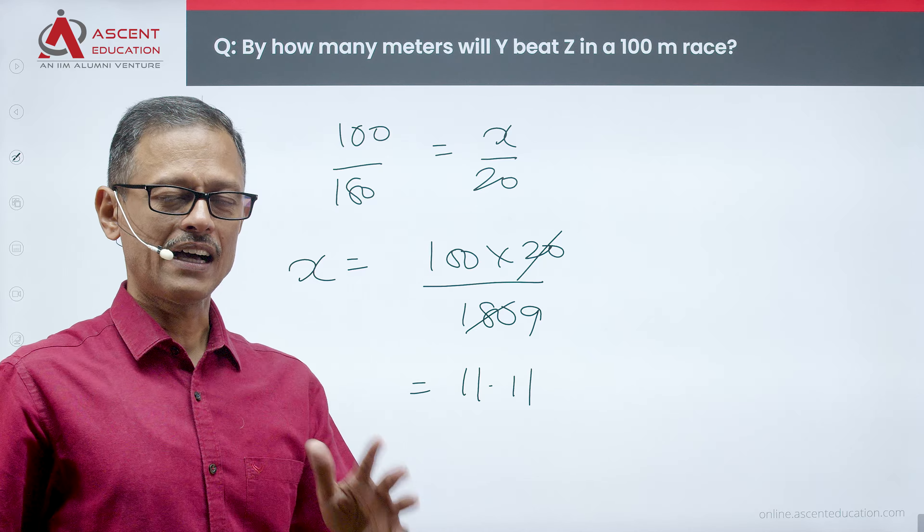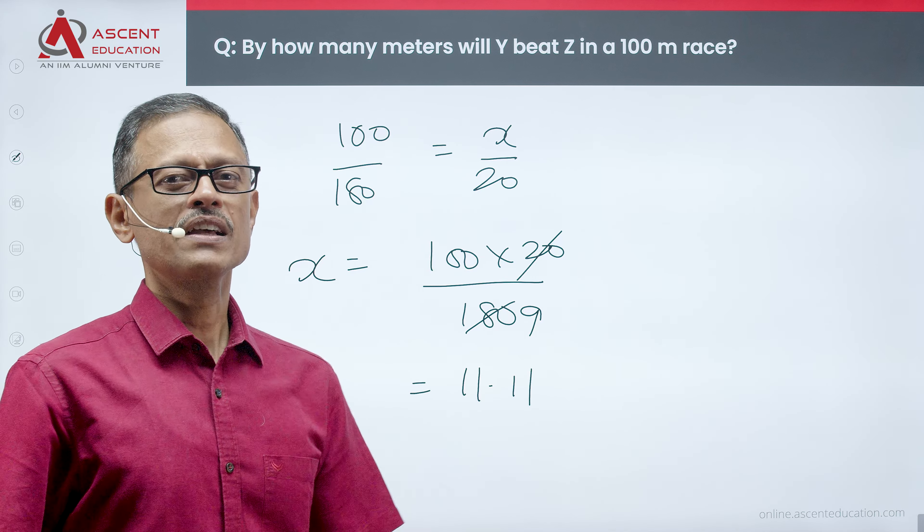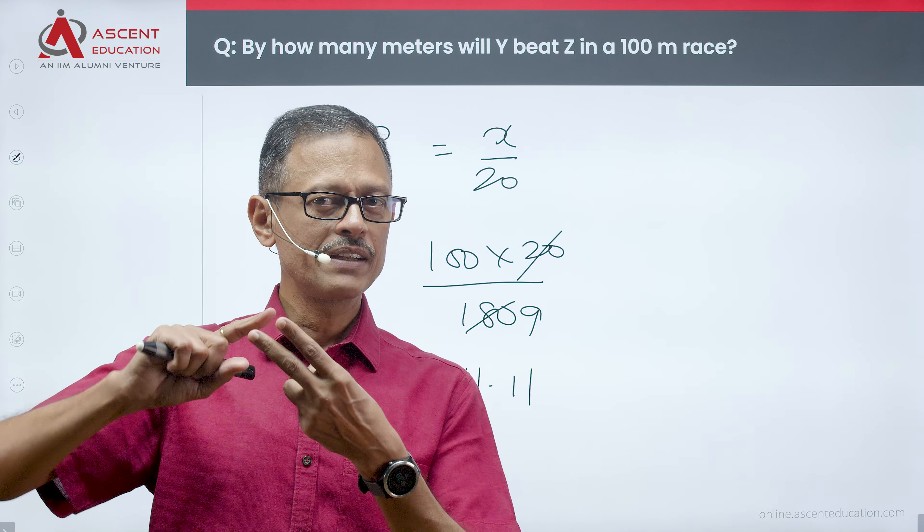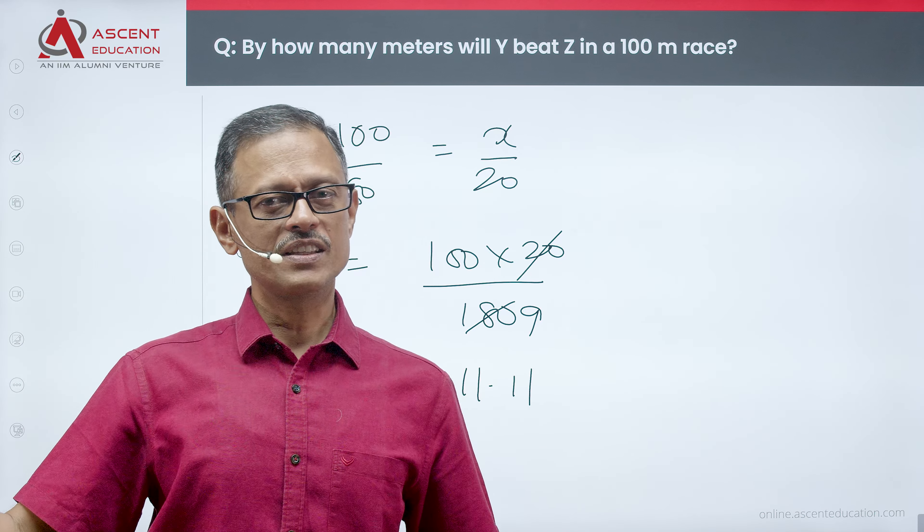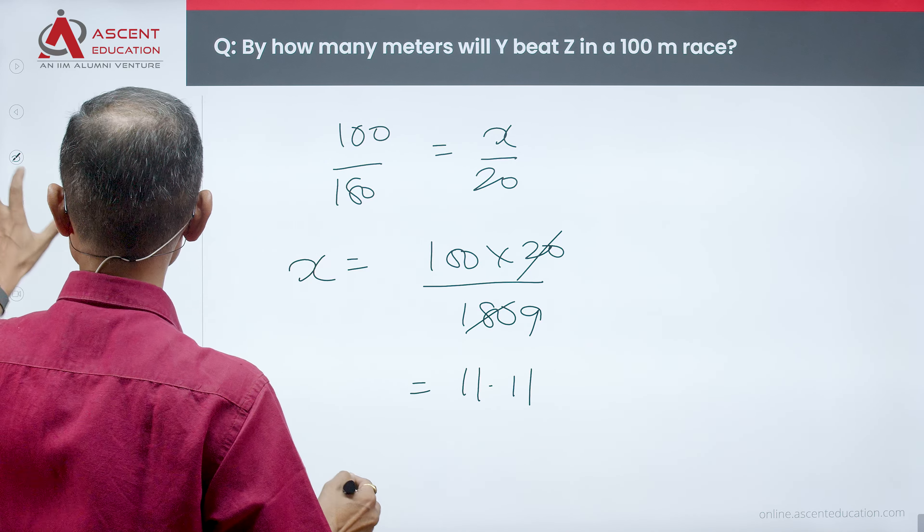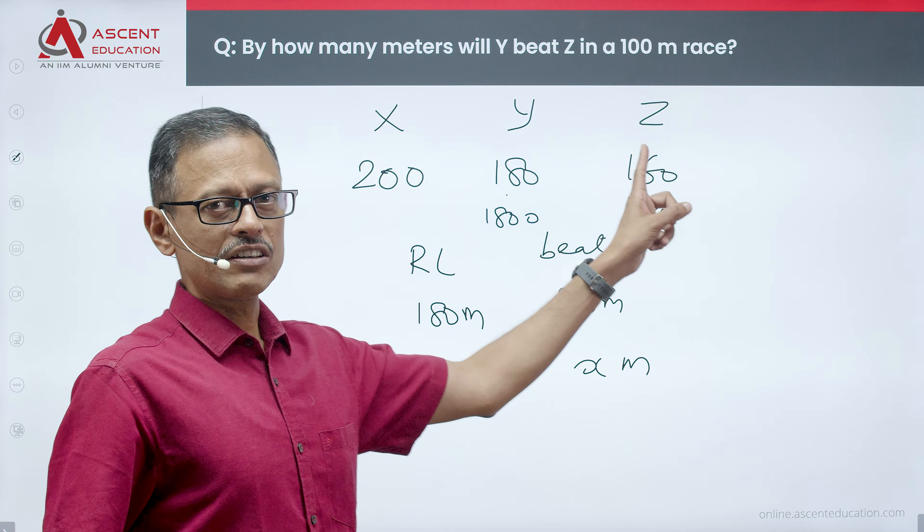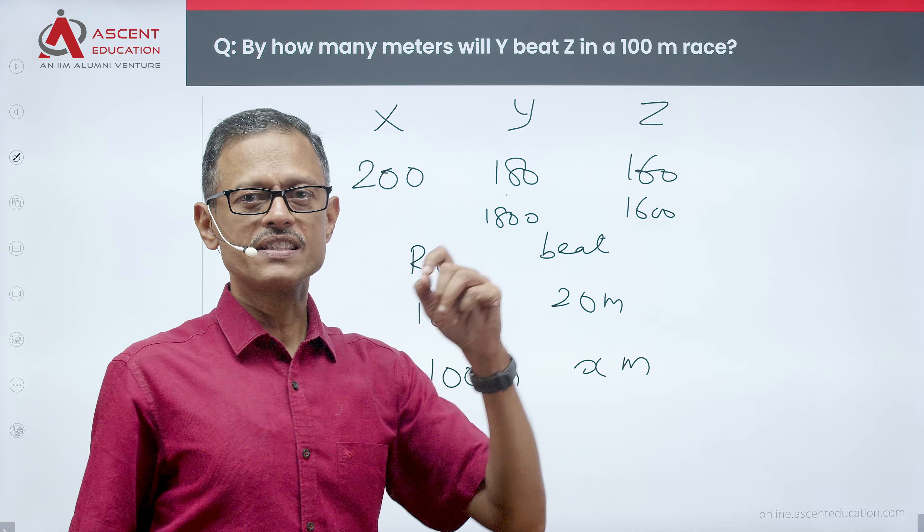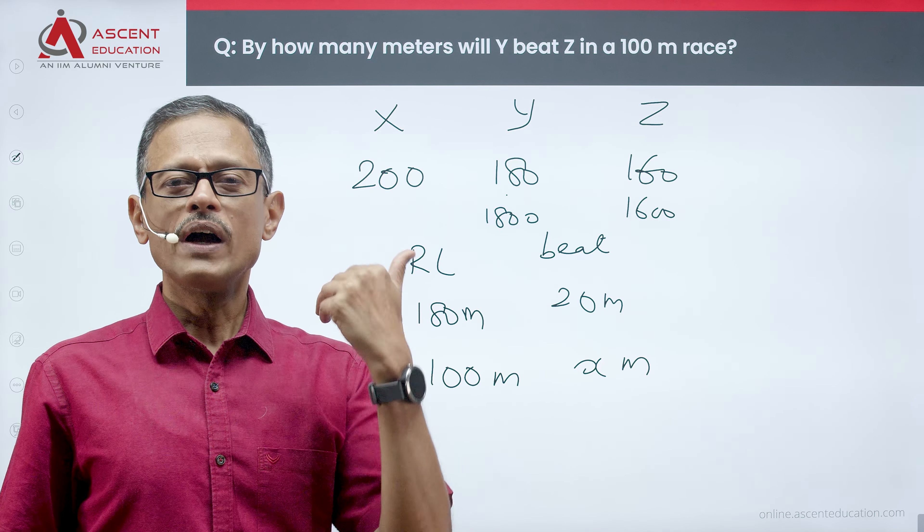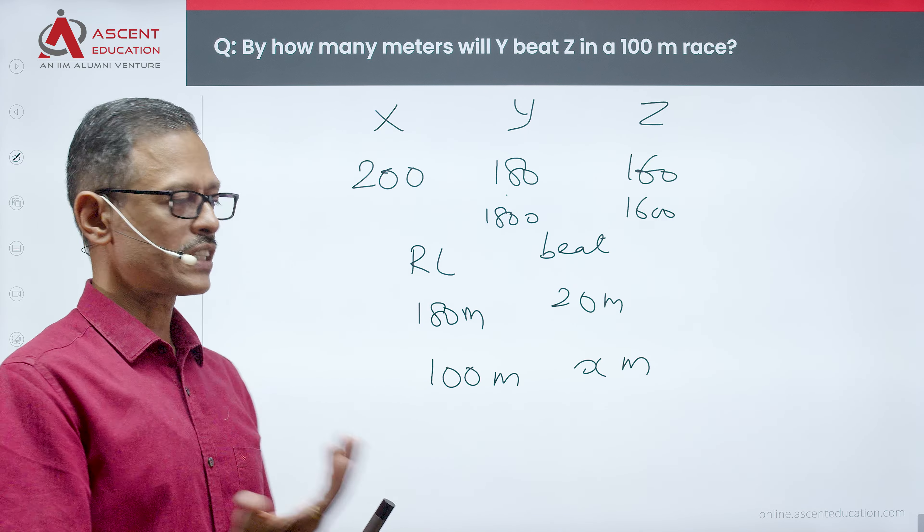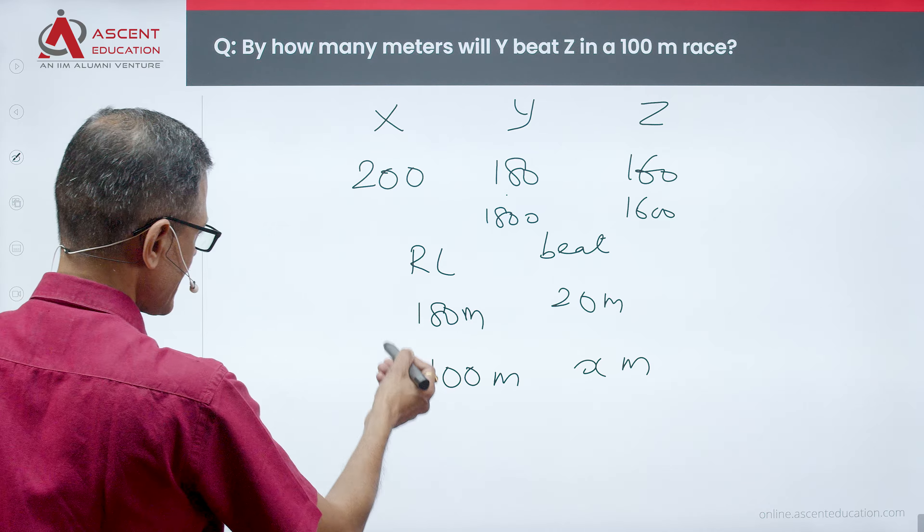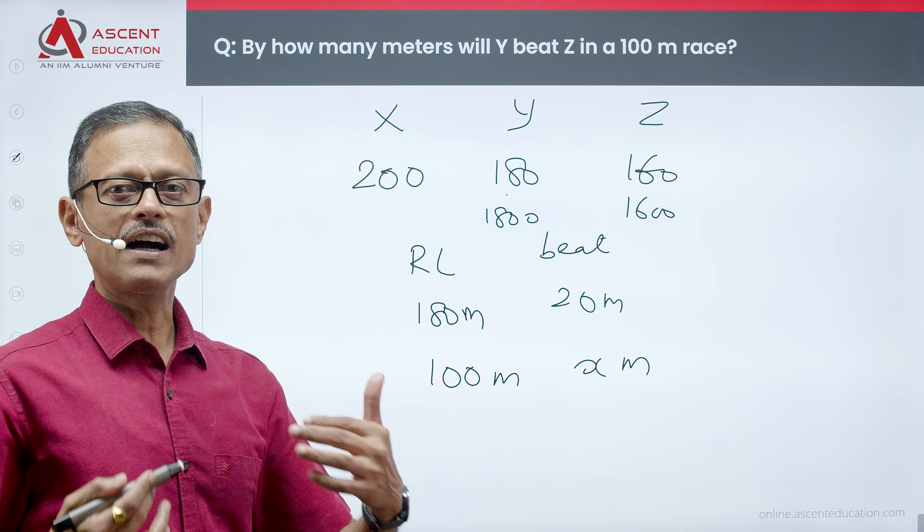This is a very straightforward simple question. In 200 meters, X beats Y by 20 meters, so Y is at 180. He beats Z by 40 meters, so Z is at 160. So 180 meters race means Y finishes when Z is at 160. Y will beat Z by 20 meters. So how does he beat in a 100 meter race?